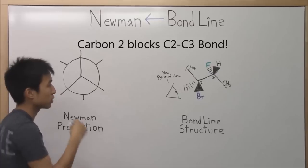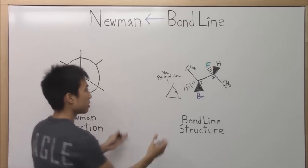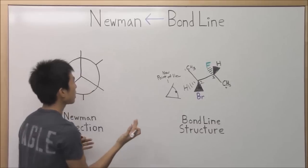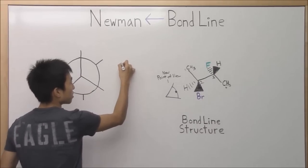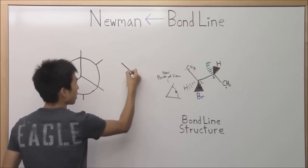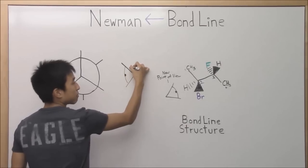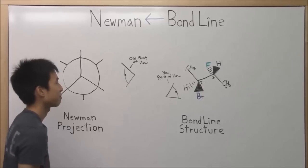And now the second eyeball that you're going to need to draw is your old point of view, so you can kind of keep track. So in our bond line structure, we were looking at it like this. We were almost sort of looking at it from the right in terms of our Newman projection. So I would go ahead and draw an eyeball over here, and then I would label it old point of view.